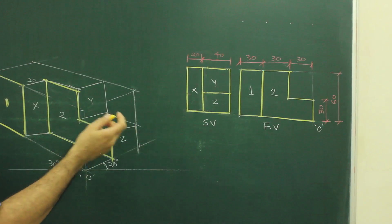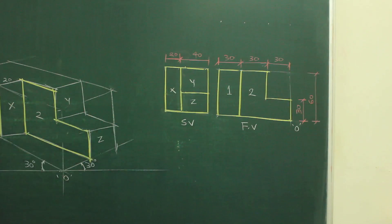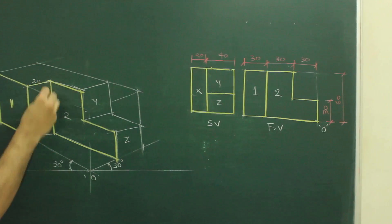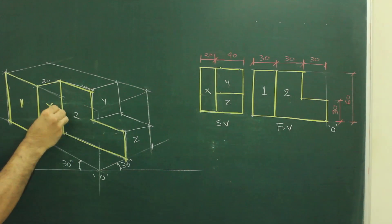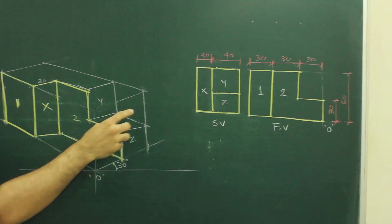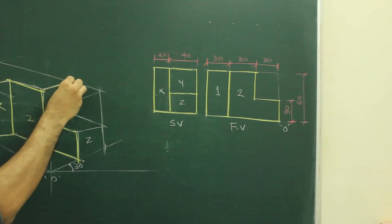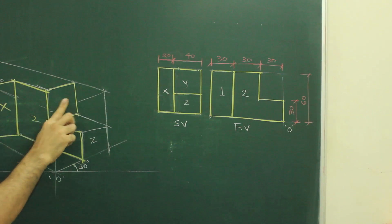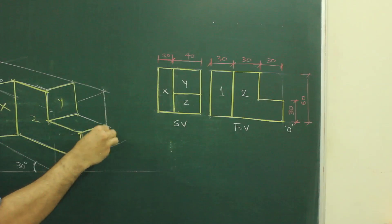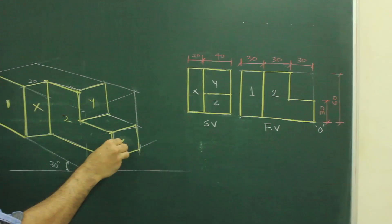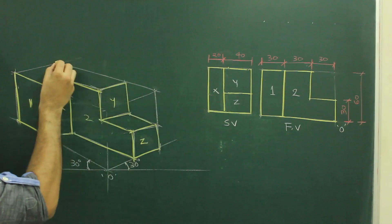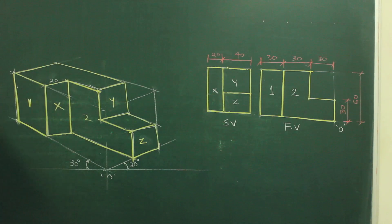Then if you see side view, you have X. That is here. Then you have Y. So you have to go behind by how much? 40. Same way here also, you go behind by 40. You will get Y and Z. And this entire block will be down.